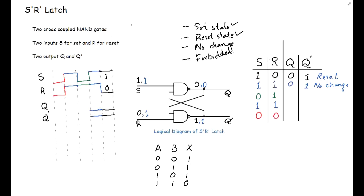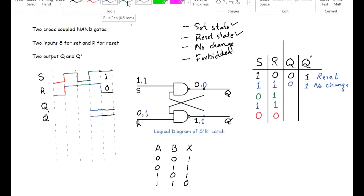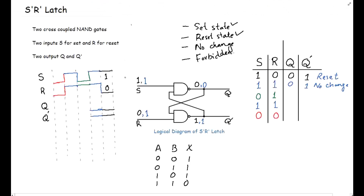Similarly, in the third case we change the inputs to S=0 and R=1. For this combination, 0 and 1 at the first NAND gate gives output 1, and then 1 and 1 at the second NAND gate gives output 0 from the truth table. So the result is Q=1 and Q'=0. This state is called the Set state of the S̄R̄ latch.